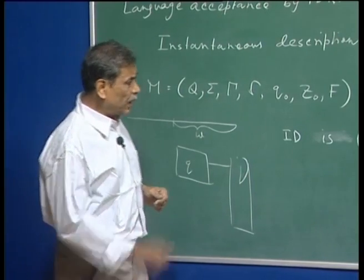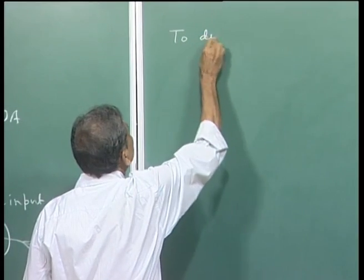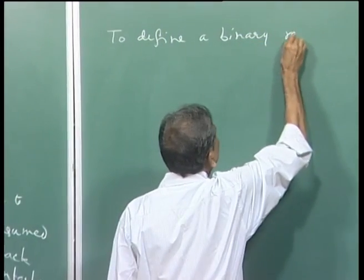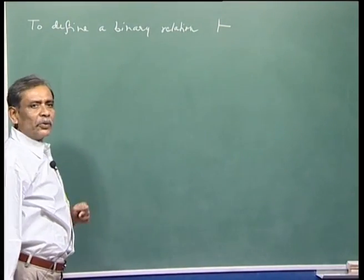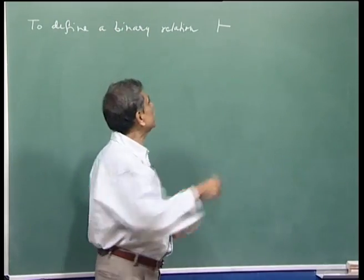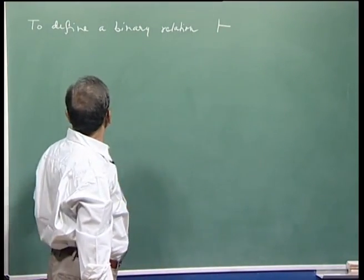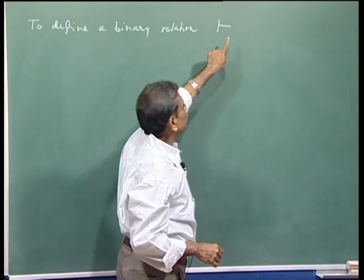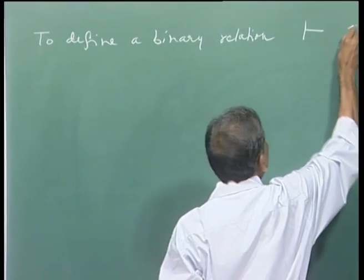What we are trying to do is define a binary relation, denoted by the turnstile symbol. This symbol is borrowed from logic — it is called the turnstile. We are defining a binary relation over the set of IDs of a particular PDA, denoted by this symbol.